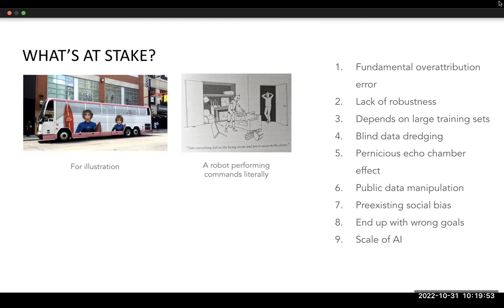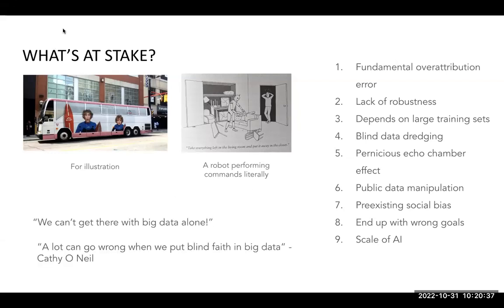This shows that accuracy does not mean everything. Ninth, AI is deployed at large scale, so one tiny mistake gets amplified — a biased policy deployed in law enforcement drastically amplifies that bias. The moral of this chapter: wherever we want to go with AI models, we can't get there with just big data alone. A lot can go wrong if we put blind faith in big data, as per Cathy O'Neil.